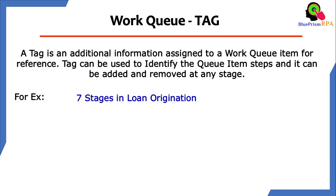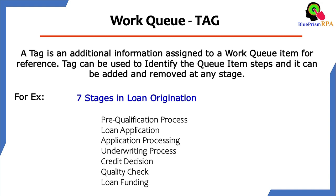Let me show you about the use of this tag in Work Queue. Let's say there is a process of Loan Origination. There are 7 stages in Loan Origination: Prequalification Process, Loan Application Process, and Application Processing Stage.